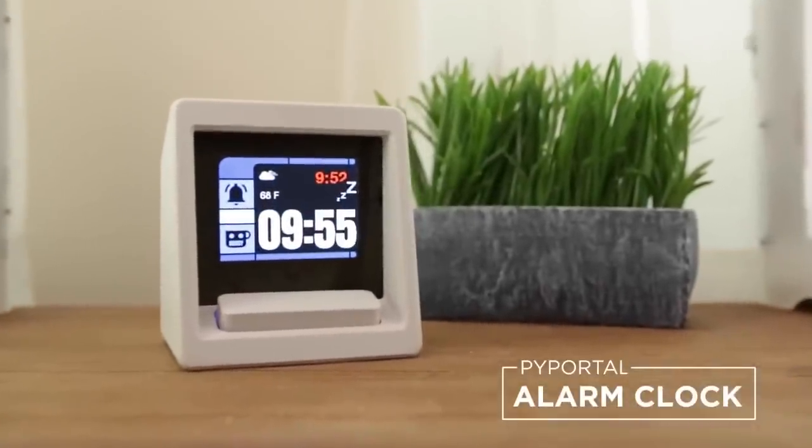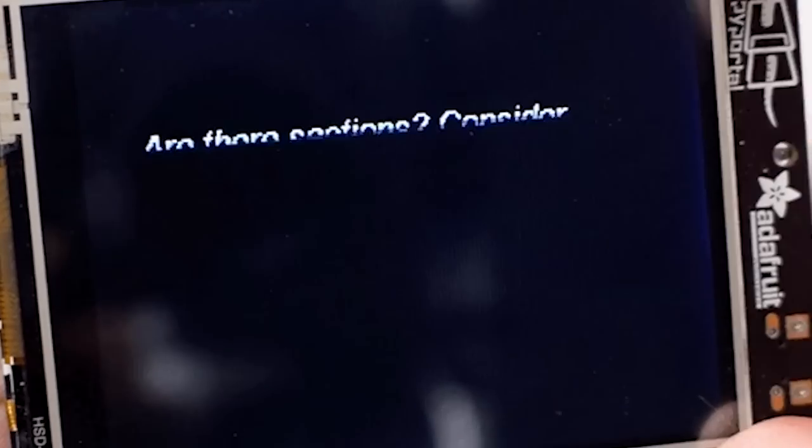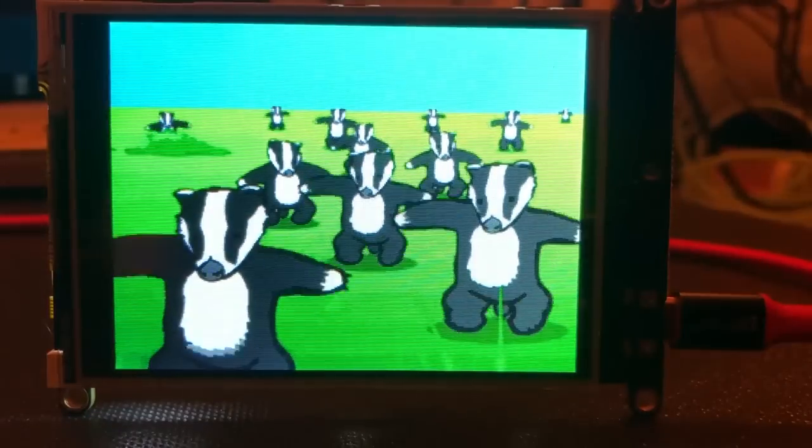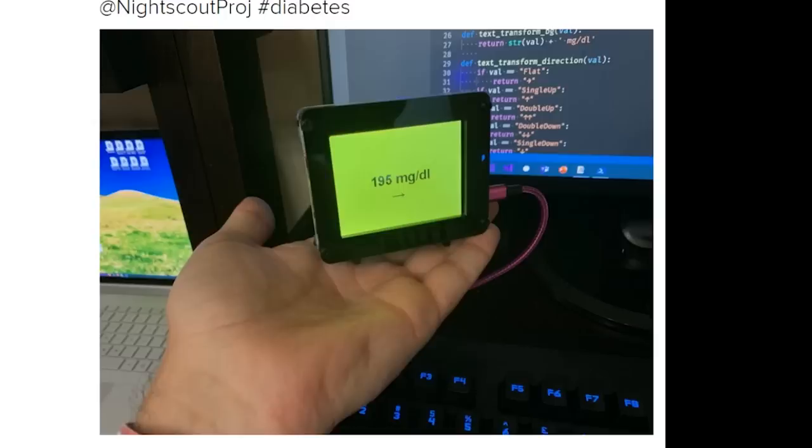This week on Maker Update, a Star Trek themed alarm clock, oblique strategies, an animated gift display, a Viewmaster, a NeoPixel corset, and a blood glucose display.